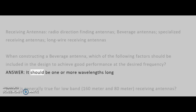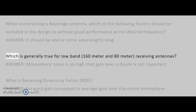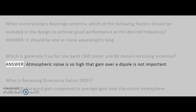Answer: It should be one or more wavelengths long. Which is generally true for low band — 160 meter and 80 meter — receiving antennas? Answer: Atmospheric noise is so high that gain over a dipole is not important.